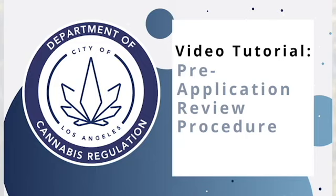These bulletins are also located under the licensing menus, applications forms, and documents page. Please review the pre-application review information and procedure bulletin before you begin the pre-application review process. The bulletin provides links to all of the required forms and step-by-step instructions.